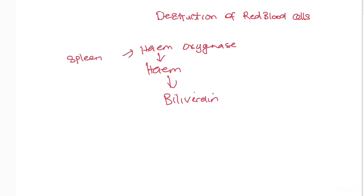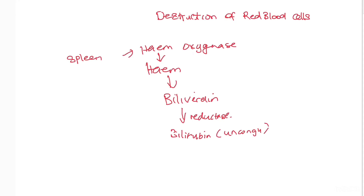Biliverdin is then reduced by the enzyme biliverdin reductase, which converts it to bilirubin. This bilirubin is insoluble and is called unconjugated bilirubin. Because it is insoluble, it cannot be excreted directly.